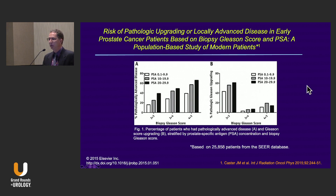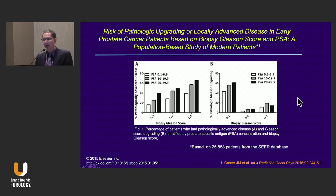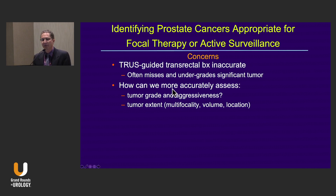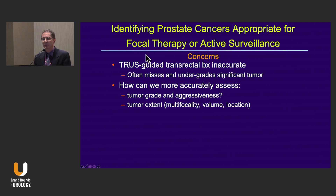Why have this talk? We all recognize and have known for years the overwhelming data that our 12-core systematic biopsies are inaccurate. They're only about 50% to 65% accurate for picking up cancers at all, and as you see from the SEER database, a large portion of cancers thought to be low-volume 3+3 on biopsy are upgraded and even have advanced stage. The transrectal biopsy approach often misses and undergrades significant cancers, leaving concerns when considering focal therapy or active surveillance.